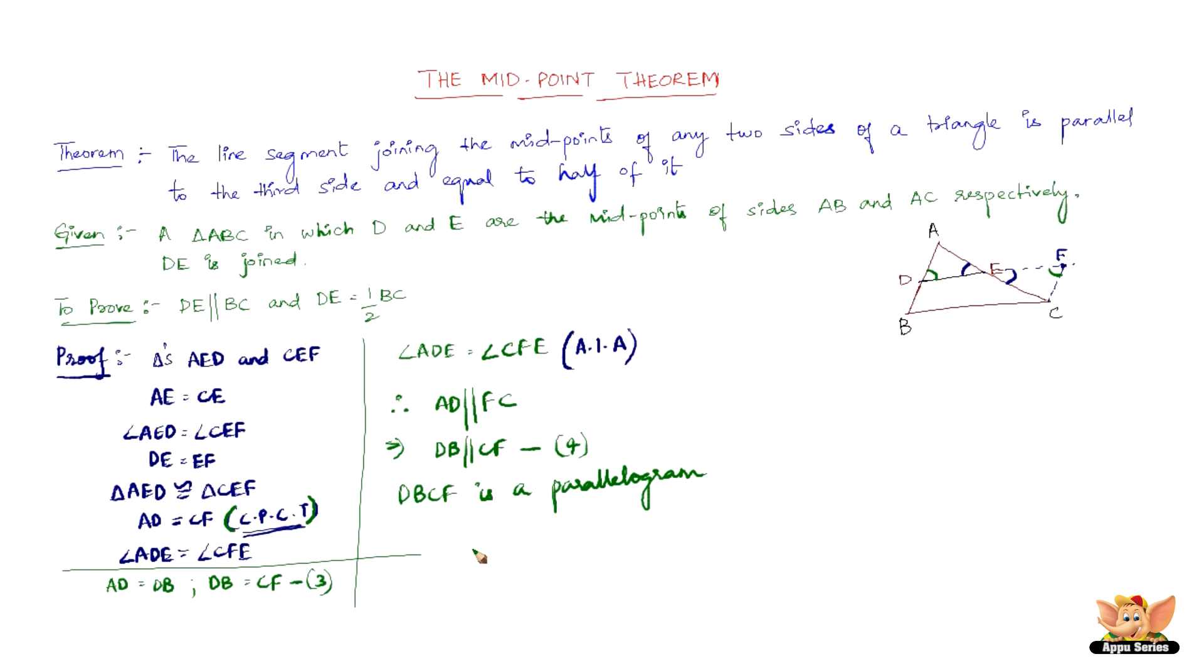So therefore, if DBCF is a parallelogram, we naturally have DF being parallel to BC and DF equal to BC. We've already proved one part. By proving DF is parallel to BC, we've proved that the line segment joining the midpoint of the two sides is parallel to the third side. This is already done. So all we have to prove is DE is half of BC.